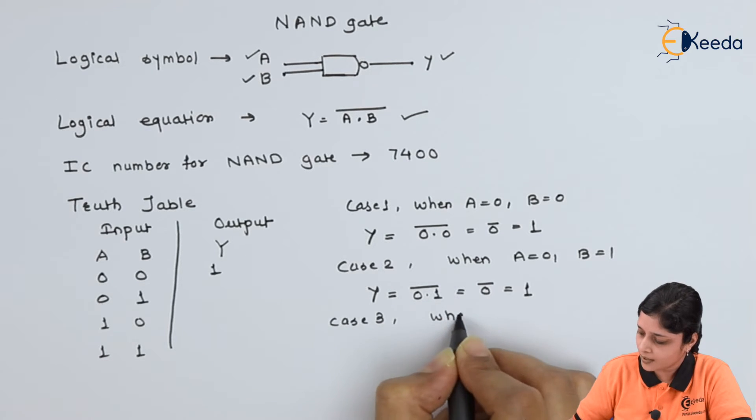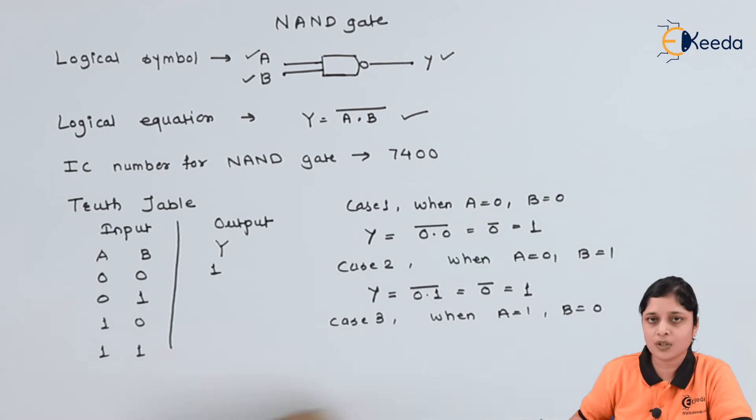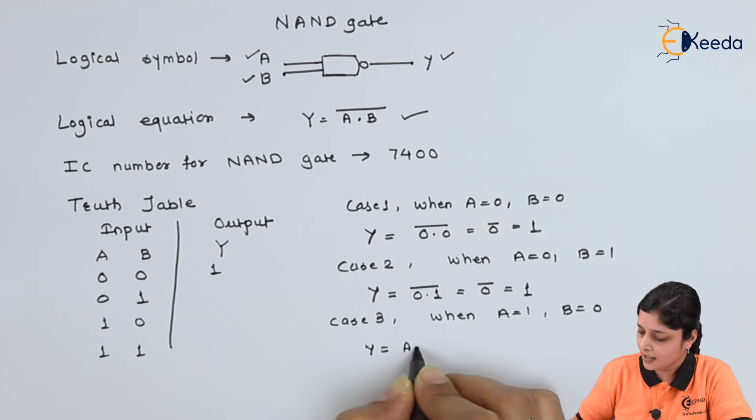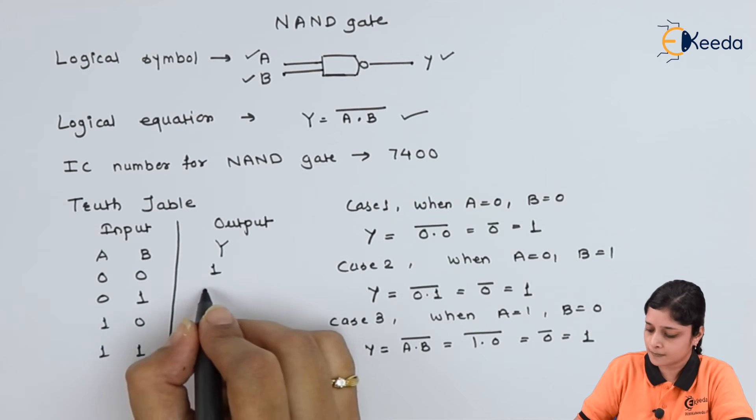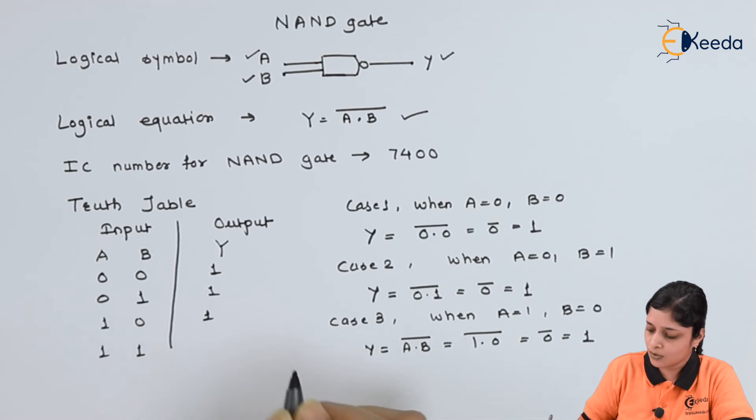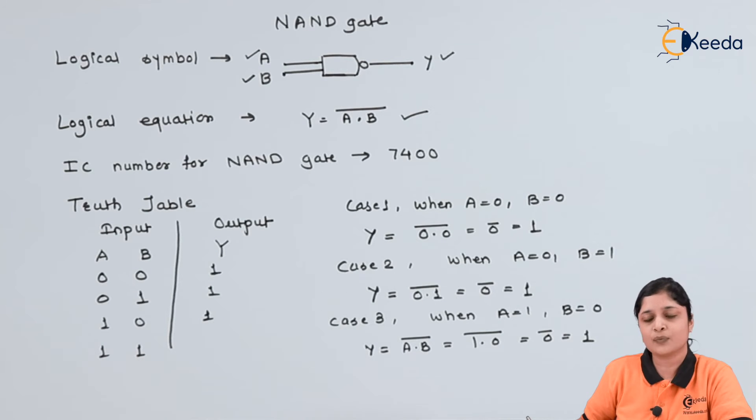Case 3: when A equals to one, B equals to zero. Put the values of A and B in logical expression that is Y equals to A dot B bar. That is one dot zero bar. One dot zero is always zero and complement of zero is always one. So you will get the output as one.